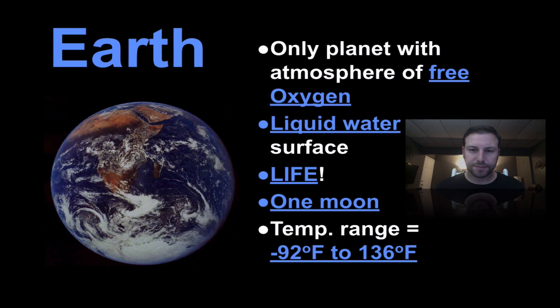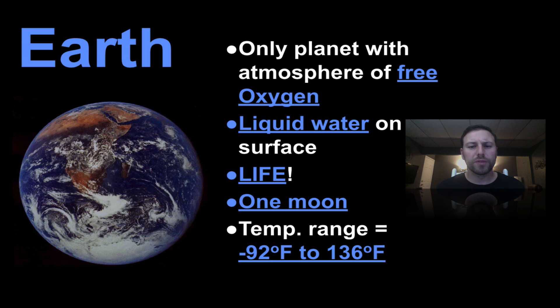Then moving on to Earth, just a brief overview of these planets. Only planet with an atmosphere of free oxygen, good thing for that. Liquid water also on the surface, we have life here. One moon, and we have a relatively large temperature range when you look at the coldest spots within Antarctica and some areas of the planet to basically the warmest of those deserts. You've got negative 92 degrees Fahrenheit all the way up to 136 degrees Fahrenheit, so a pretty decent range.